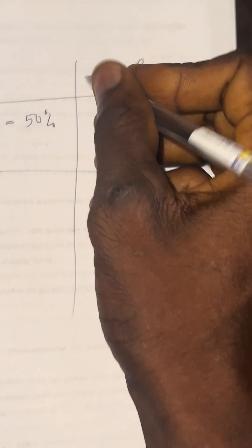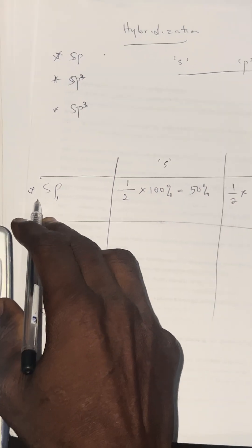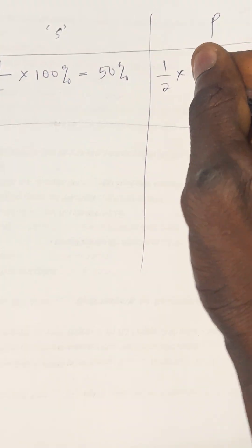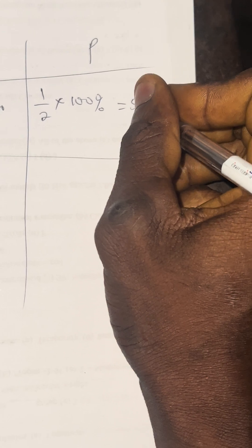For the P character in SP as well: the number of P we have is 1, over the summation of the two, which is 1S and 1P, making it 2. Multiply by 100 percent. The answer here will still be 50%.